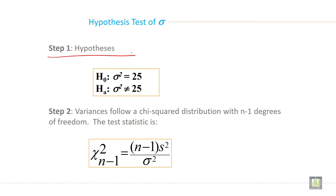So first step is write null and alternate hypothesis. So null hypothesis: σ² = 25, and the alternate hypothesis: σ² ≠ 25.